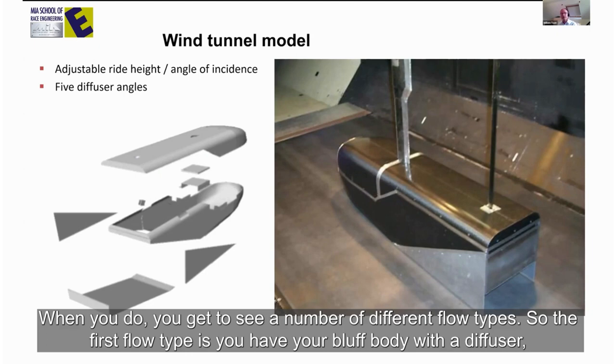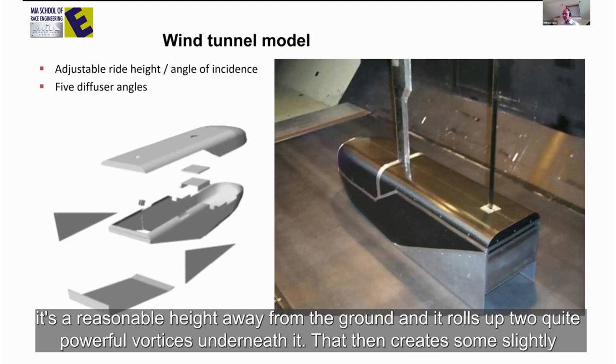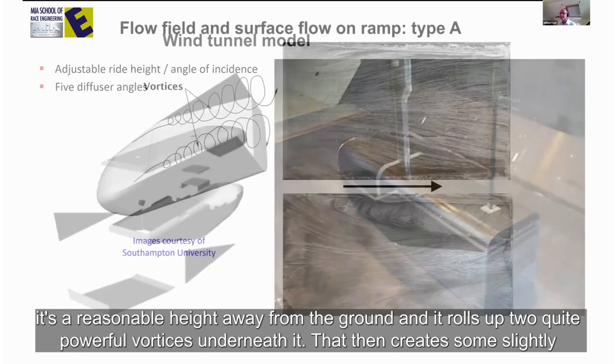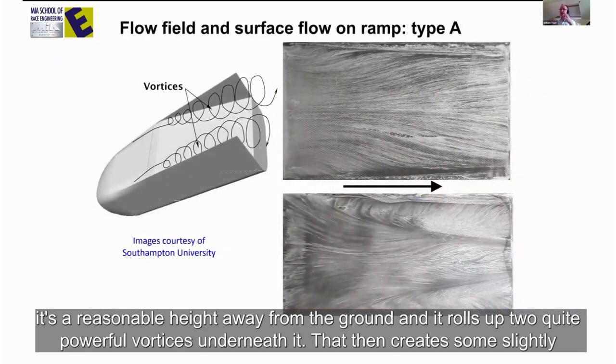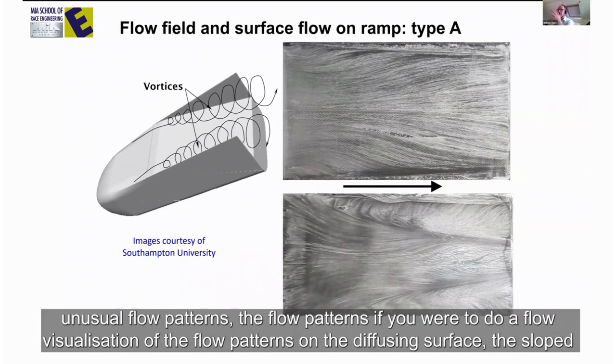So the first flow type is you have your bluff body with a diffuser at a reasonable height away from the ground, and it rolls up quite powerful vortices underneath it that then create some slightly unusual flow patterns.